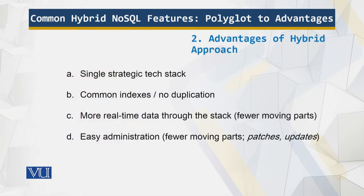A single strategic technology stack implements a single data layer to power all your applications. As an IT professional, you have probably unknowingly been using a relational database management system to do this, but NoSQL means there is no upfront schema design. There are common indexes and no duplication. Storing a single index rather than having an index of the same data in multiple products is advantageous. Storing a document in an enterprise content management system means indexes are held in an RDBMS. Similarly, there is more real-time data through the stack and fewer moving parts, because indexes are updated as information is added to a hybrid NoSQL document database and search engine.